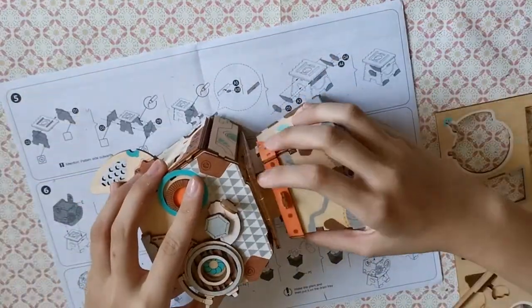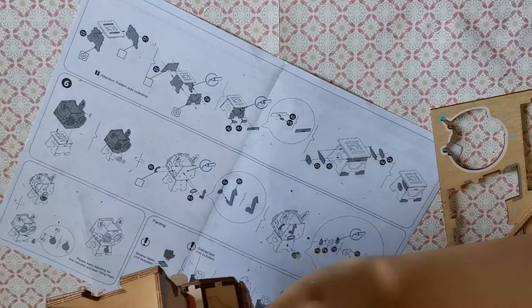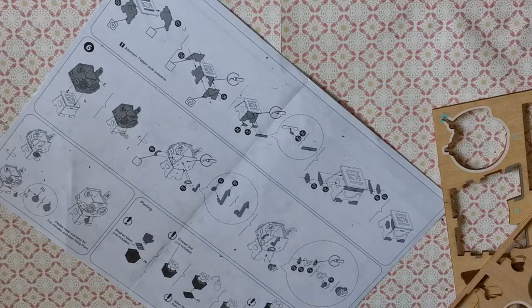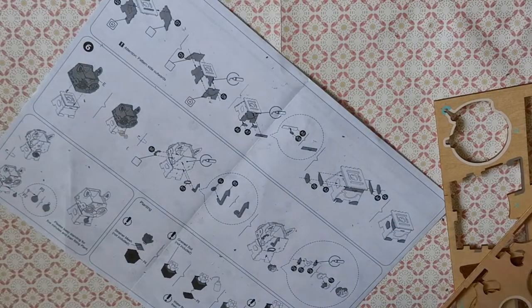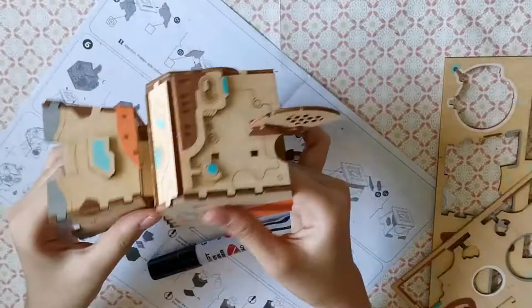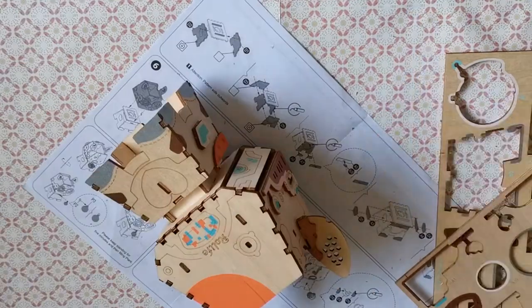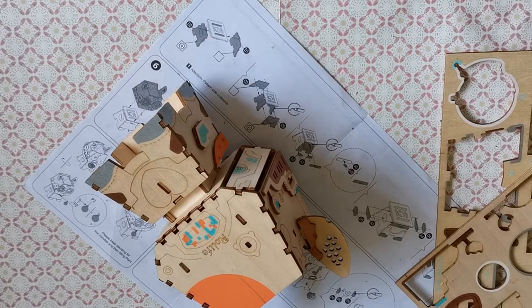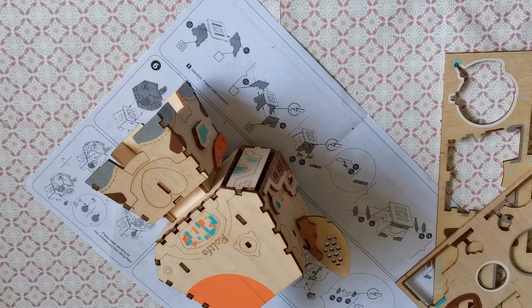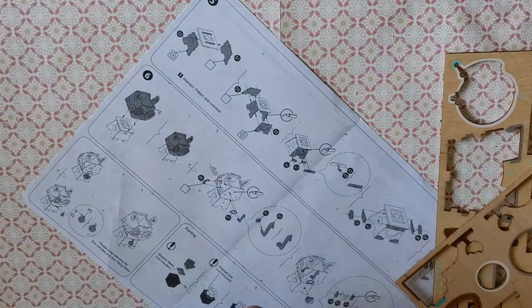Now here comes the daunting part of putting the head and body together. Why daunting, you ask? Well, it's because there is absolutely no glue involved in this at all. Instead, you're completely relying on the tabs to secure both parts together. In fact, some of the tabs are so hard to push in that I had to use a hammer just to knock them in place.